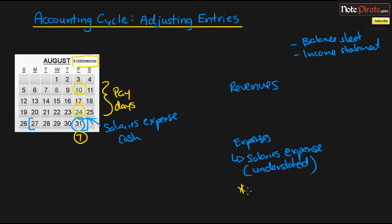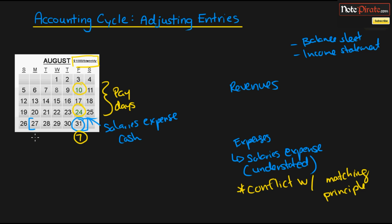This also creates a conflict with the matching principle. The point of the matching principle is to match all of the expenses incurred with the revenues earned in a given period. In August, we earned revenues every single week, so we need to show all of the expenses that generated those revenues. If we don't record the last week of expenses, we're not matching all August revenues with all August expenses — so we need to perform an adjusting entry.